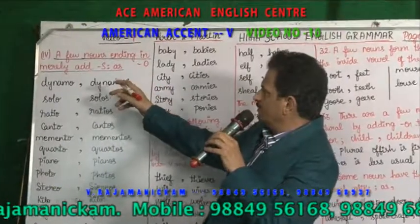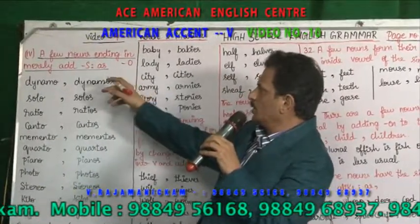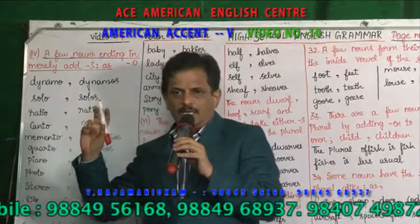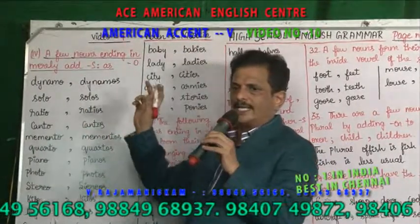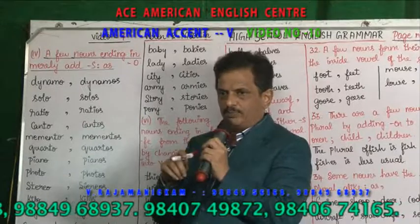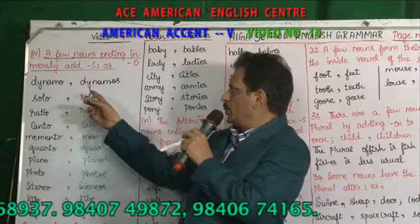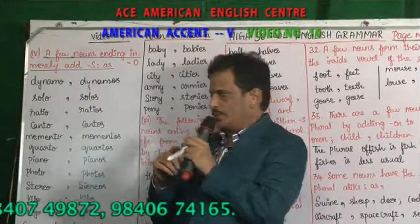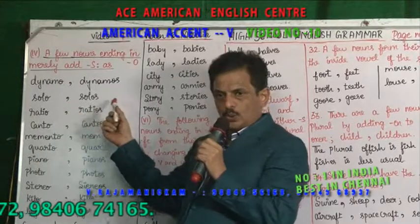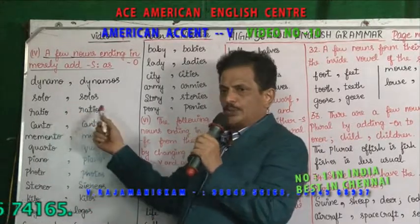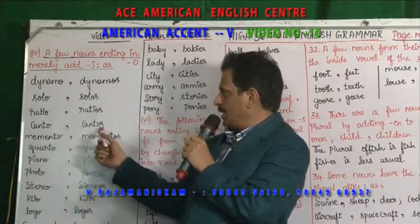A few nouns ending in O — you have just added S to make the plural. Nouns ending with O where you just add S: dynamo becomes dynamos, solo becomes solos, ratio becomes ratios, concho becomes cantos.